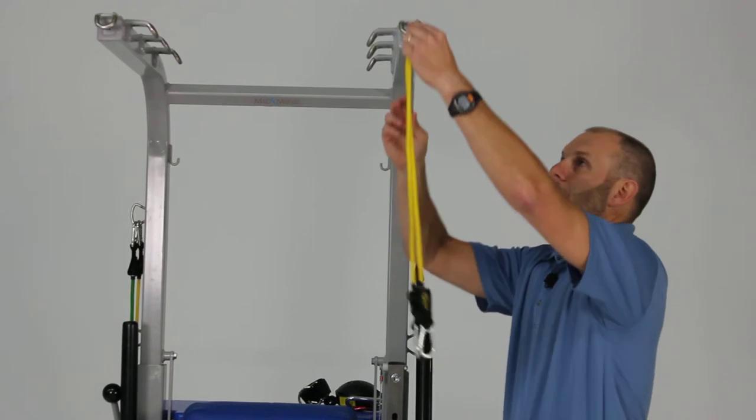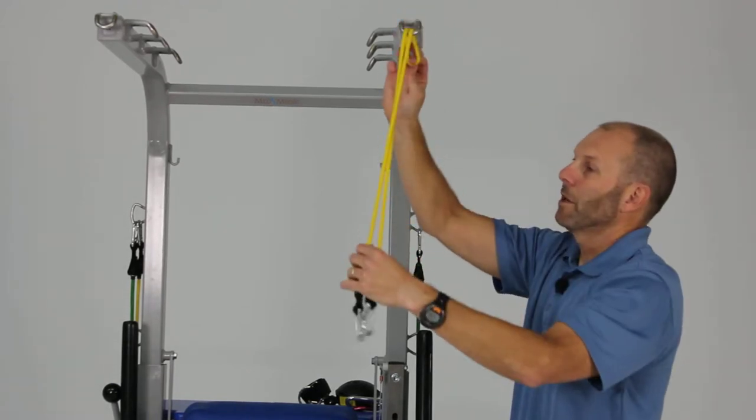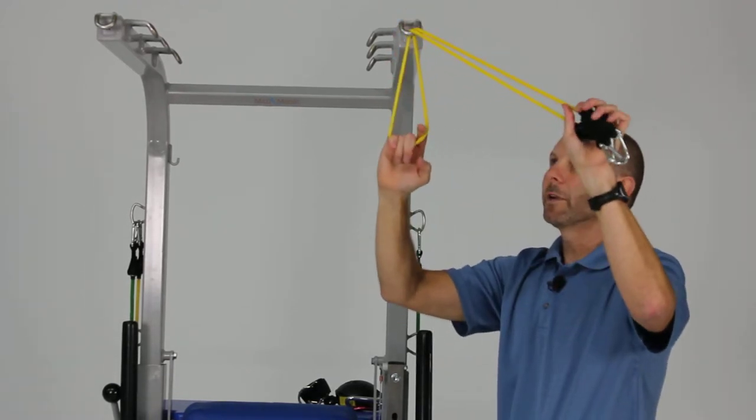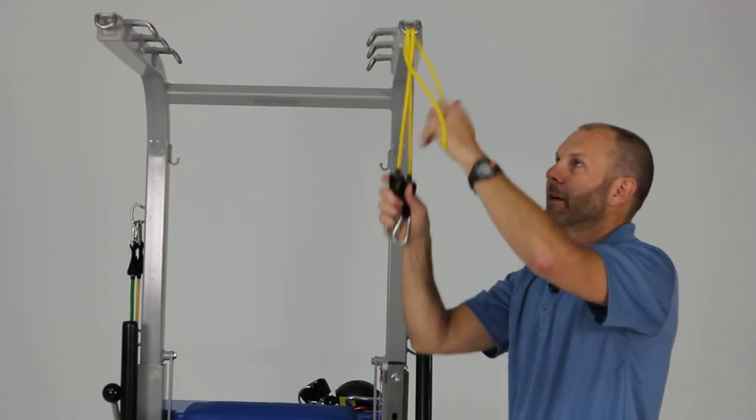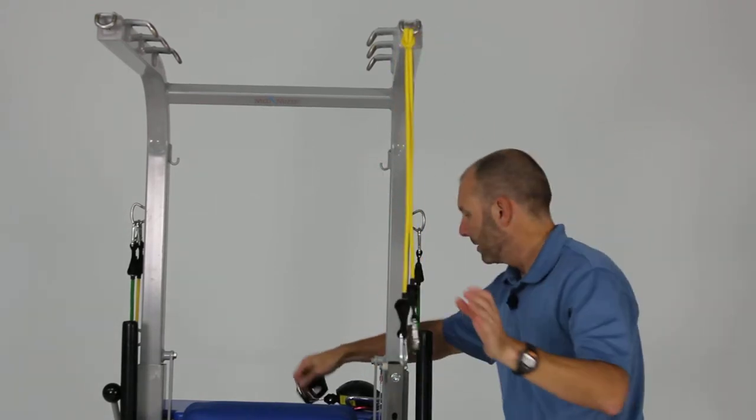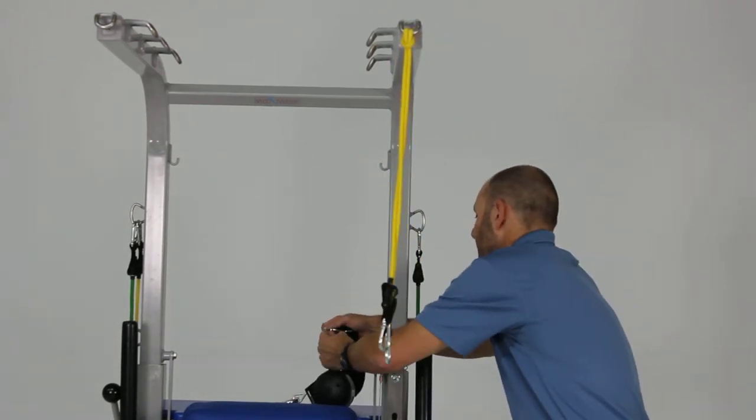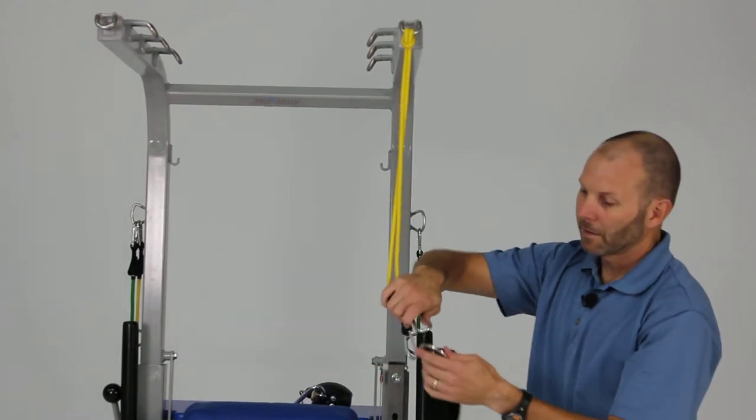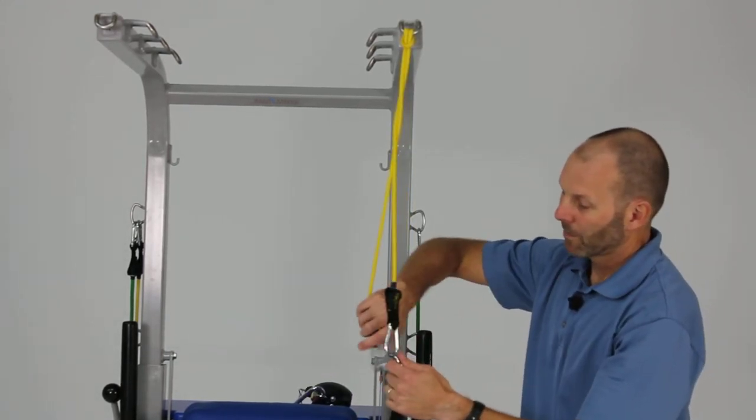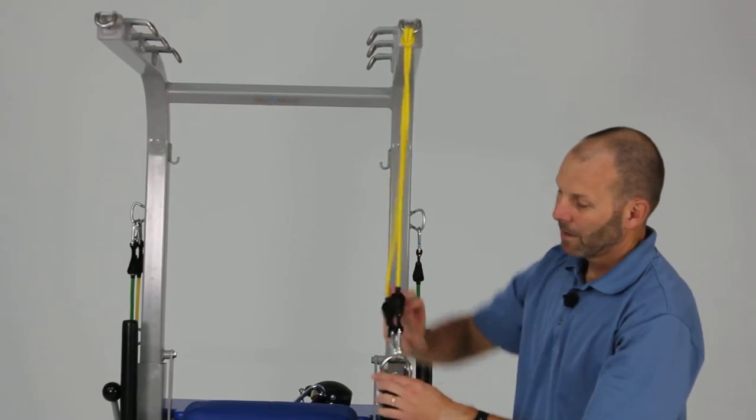What you can do is what we call a girth hitch, where we take it through, double it up, bring it back through, and then we can take our shoulder strap or our arm strap and we can place it in here.